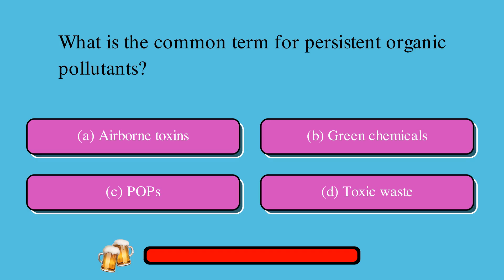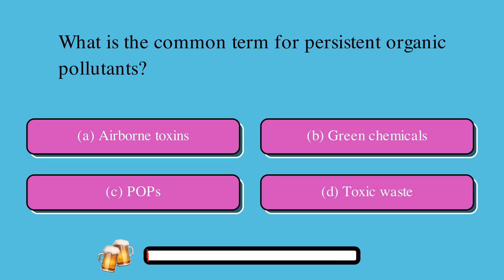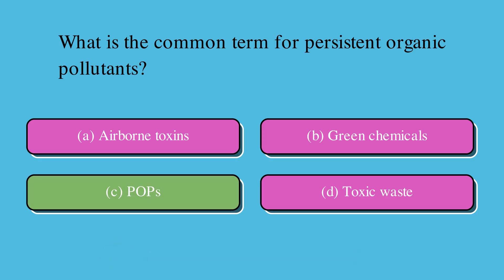What is the common term for persistent organic pollutants? A. Airborne toxins, B. Green chemicals, C. POPs, or D. Toxic waste? The correct answer is C. POPs.